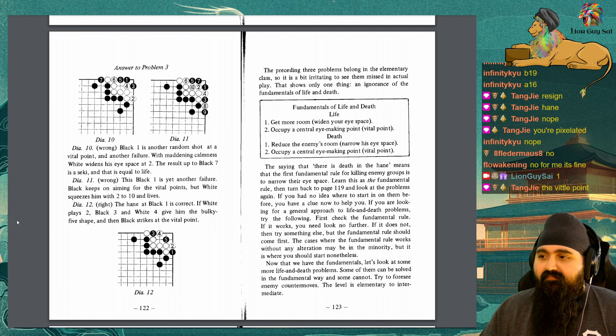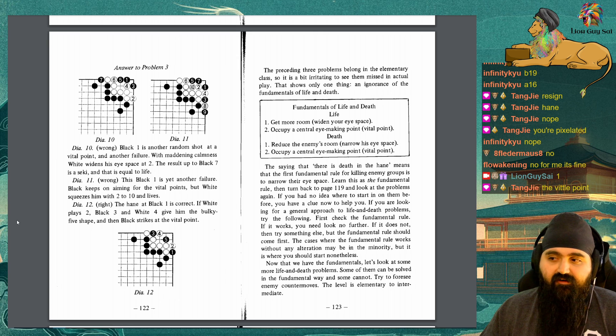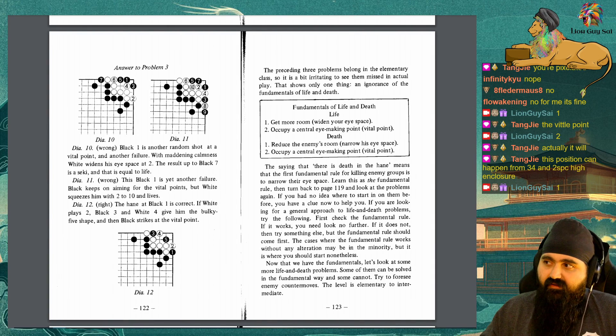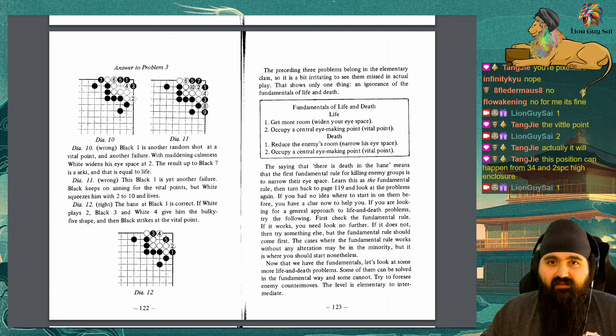Answer to Problem 3. Diagram 10: Wrong. Black 1 is another random shot at a vital point, and another failure. With maddening calmness, White widens his eye space at 2. The result up to Black 7 is a Secchi and that is equal to life. Diagram 11: Wrong. This Black 1 is yet another failure. Black keeps on aiming for the vital points, but White squeezes him with 2 to 10 and lives. Diagram 12: Right. The honey at Black 1 is correct. If White plays 2, Black 3 and White 4 give him the bulky 5 shape, and then Black strikes at the vital point.